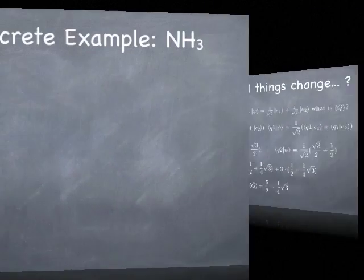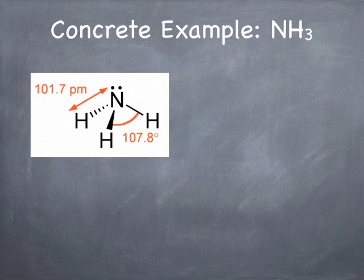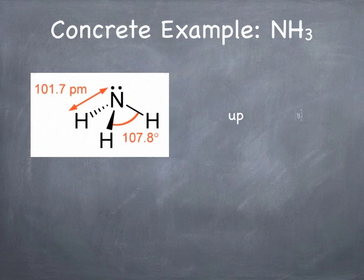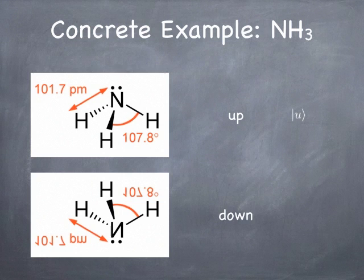Let's look at a more concrete example: the ammonia molecule. The ammonia molecule has three hydrogen atoms connected to a nitrogen atom. The state shown on the left we'll call the up state. There's a completely equivalent state with exactly the same energy and same basic geometry except it's flipped upside down—we'll call that the down state, using ket notation: |u⟩ and |d⟩.